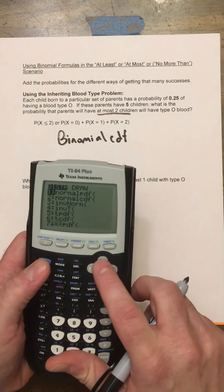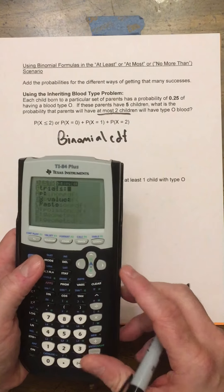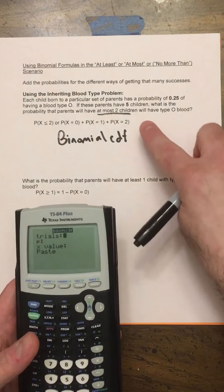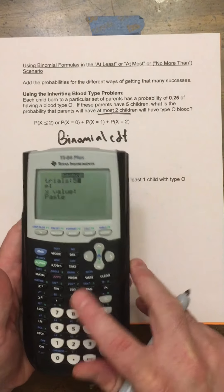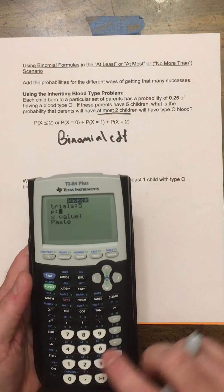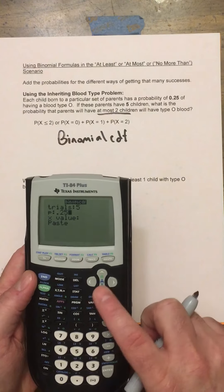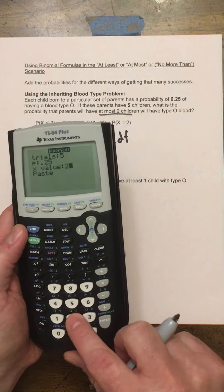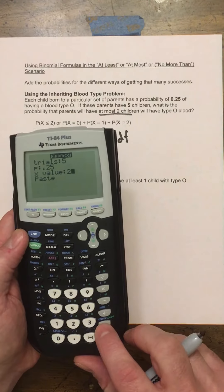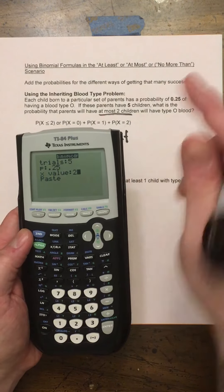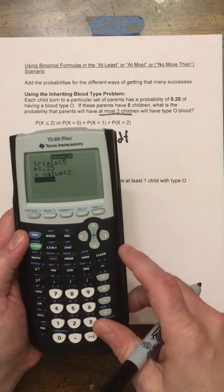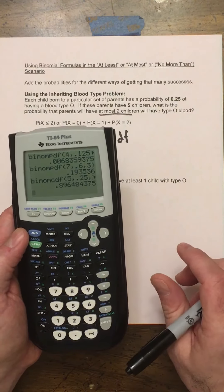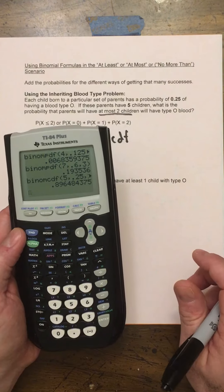So this time we're going to use, instead of the Binomial PDF, we're going to use the Binomial CDF to do this. So let's go to the Distribution, find the Binomial CDF. So again, we're going to have 5 trials, we want to have 5 children. The probability of success is 0.25, and we want at most 2 children, which means we're going to have an x-value of 2 here. That's 2 or less, 2 or 1 or 0.